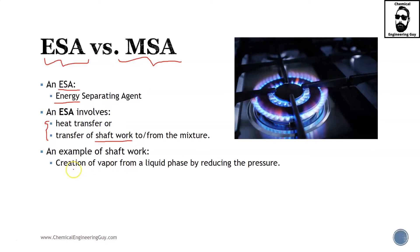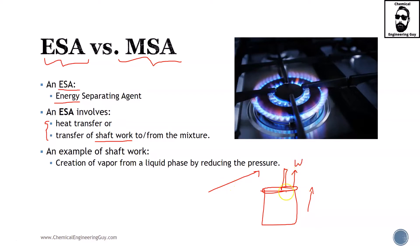An example of shaft work can be the creation of a vapor from a liquid phase by reducing its pressure. You can do this by increasing the size of the vessel — typically with a piston, which is mechanical energy or shaft work. You are adding work while increasing the volume, creating a pressure drop. If there is a pressure drop, you are reducing pressure, and what you will expect is that any liquids present are going to evaporate.